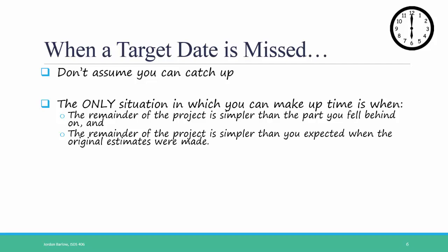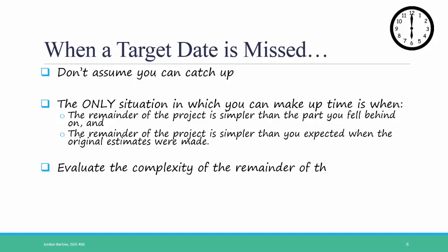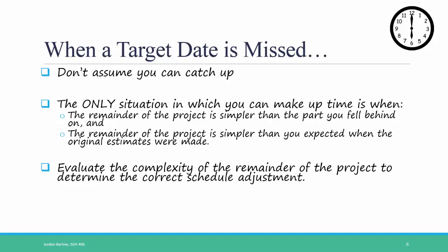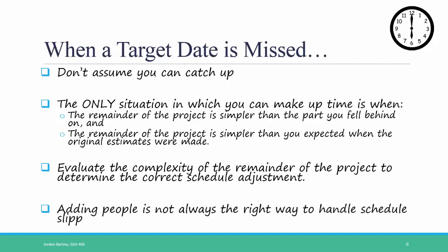For example, if you're three weeks late on a 12-week phase, that means you're 25% behind. So all of your other deadlines should be increased by 25%. To sum up, you must evaluate the complexity of the remainder of the project in order to determine the correct schedule adjustment. And remember, adding people is not always the right way to handle schedule slippages. Adding new staff to the project will increase the amount of training time and additional coordination.